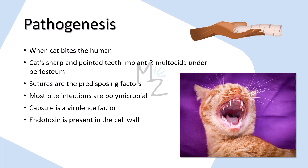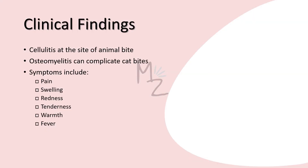Most bite infections are polymicrobial — 'poly' meaning many, 'microbial' meaning from microbes. These bite infections involve a variety of facultative anaerobes, especially Streptococcus species, and anaerobic organisms in addition to Pasteurella multocida. The capsule of this bacterium is a virulence factor, and it also has an endotoxin present in its cell wall, which is also a virulence factor.